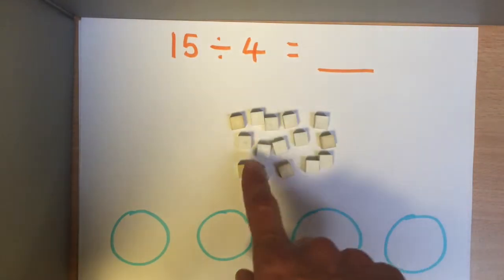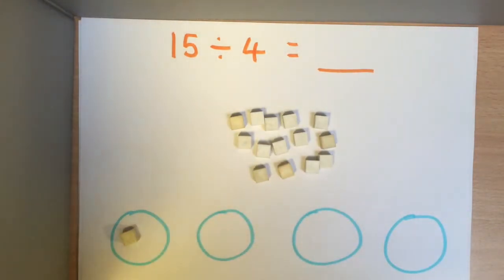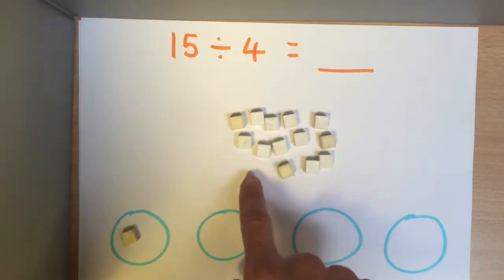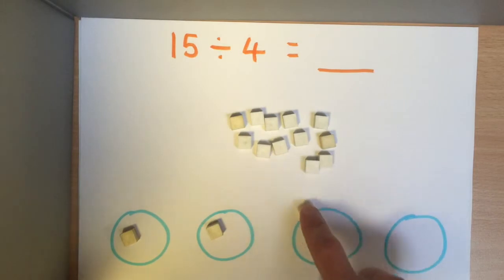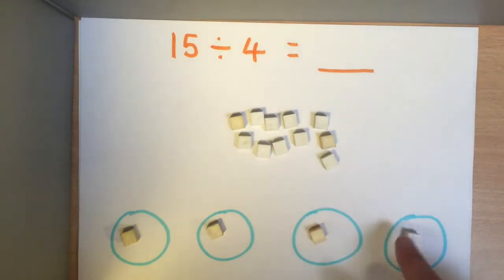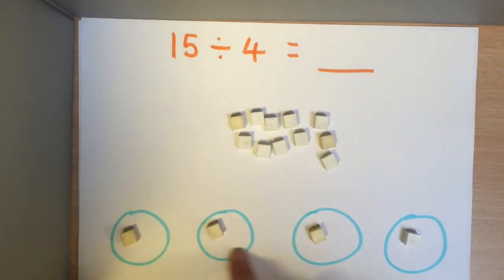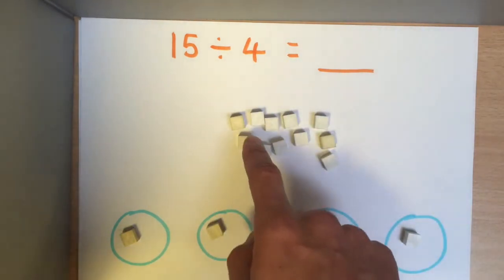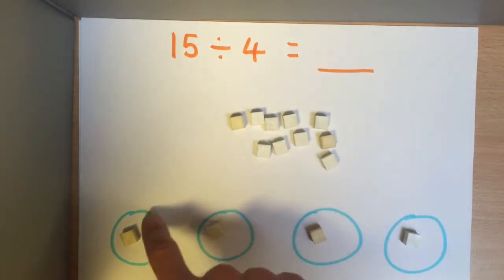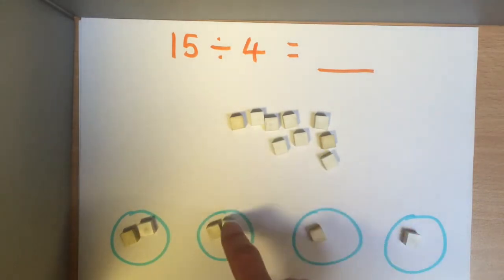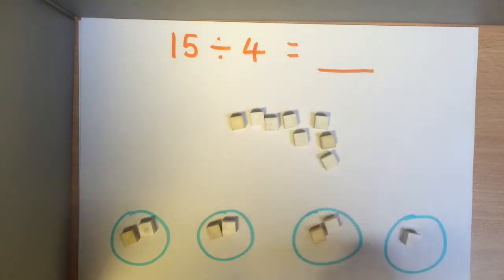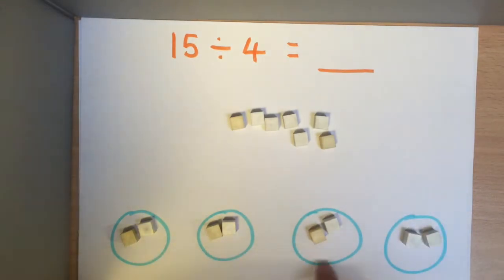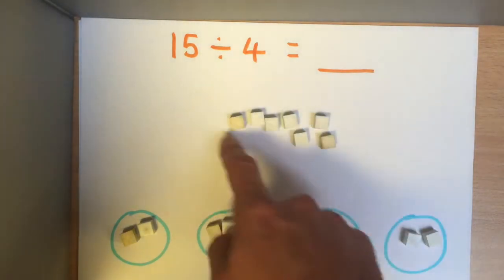Let's physically do that now. I've got one here — I'll put it in this group, into this one, into this one, into that one. So I've split part of my 15 into four groups, but I've still got some left and I can probably split it a little bit more. Let's try again: another one in here, another one in here, another one in here, another one in here.